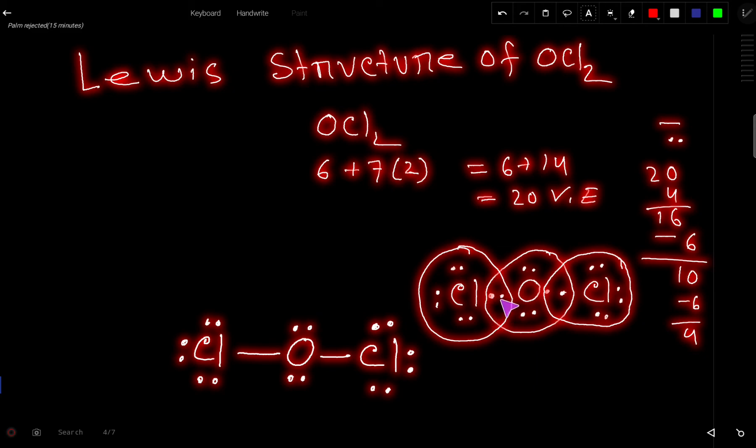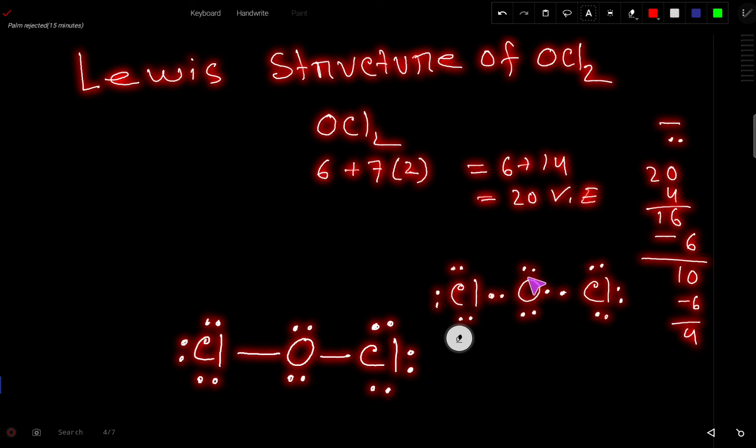So the electron pairs between 2 atoms is called bonding pair. So you can say that this is the Lewis structure of OCl2. You can express this bond pair as a dash. Here one bond pair, one dash, one bond pair, one dash. So the Lewis structure of OCl2 is this or this.